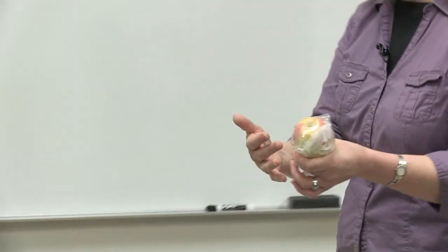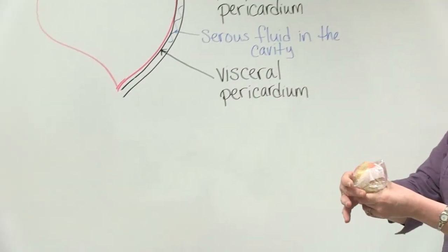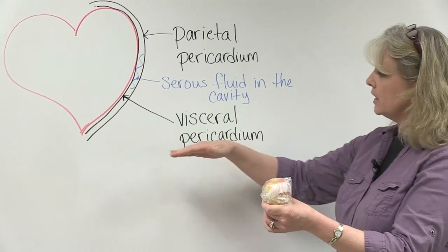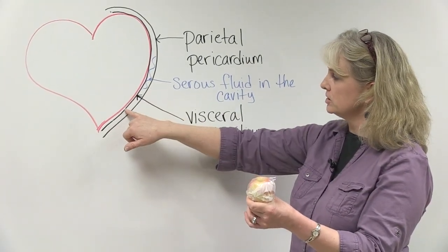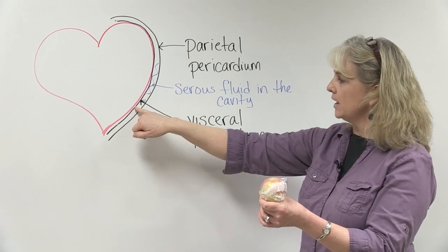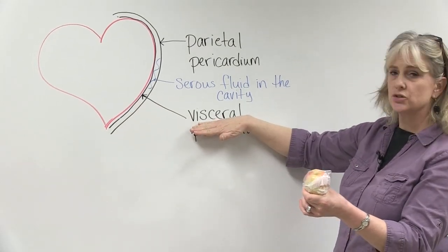These two membranes are called serous membranes, and there's two of them. You see my heart here on the picture, and you see this inner membrane here—that inner membrane is going to be called the visceral membrane.